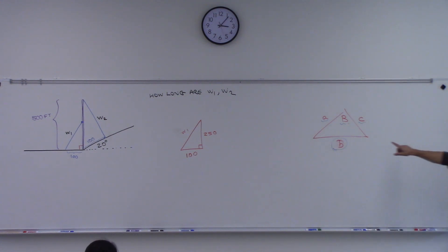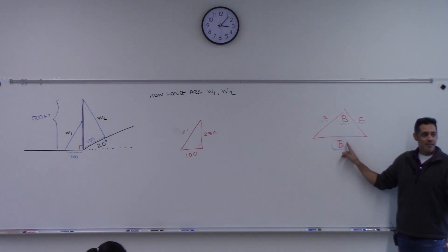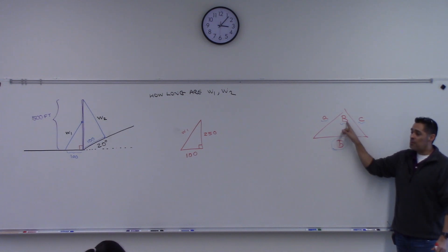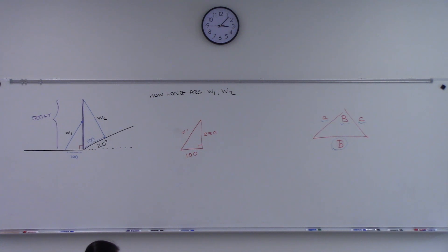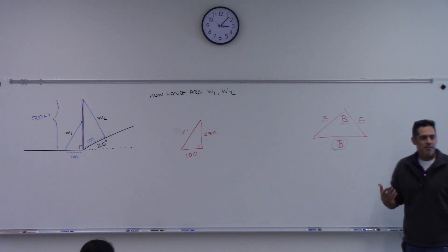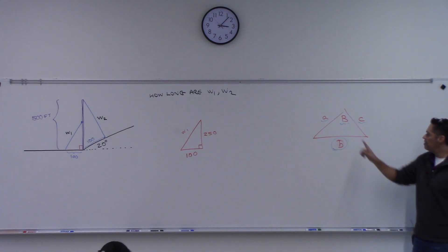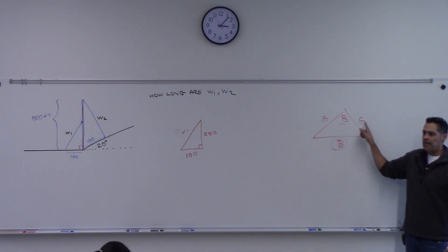So imagine we're trying to use law of cosines and that angle is 90 degrees. Then what would happen at the very end? Cosine of 90 is zero — that term is gone. Which means you have just the front part. Wouldn't that be the Pythagorean? It's basically like a squared plus b squared equals c squared — these two sides squared added together equals this.